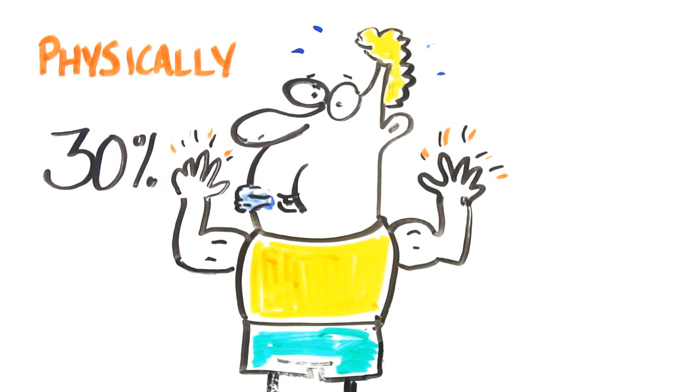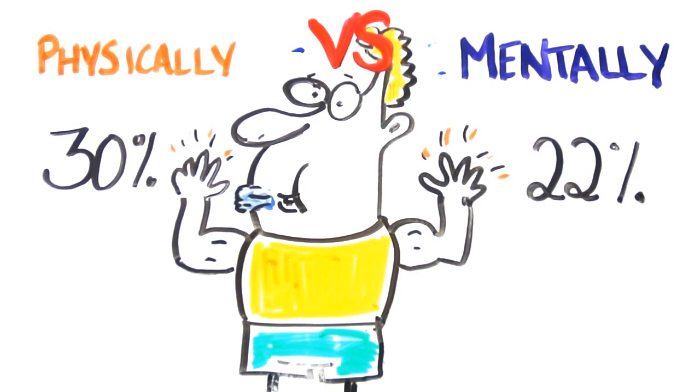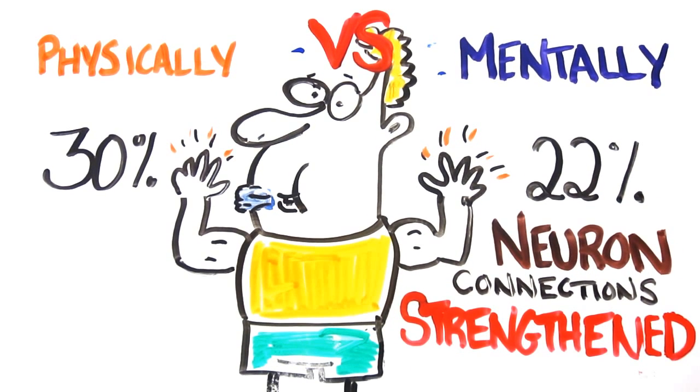Those who actually did the physical exercise increased their strength by 30%, while those who imagined doing it increased their muscle strength by 22%. This is because the neurons responsible for the movement instruction were still being used and strengthened, resulting in increased strength when the muscles actually contracted.